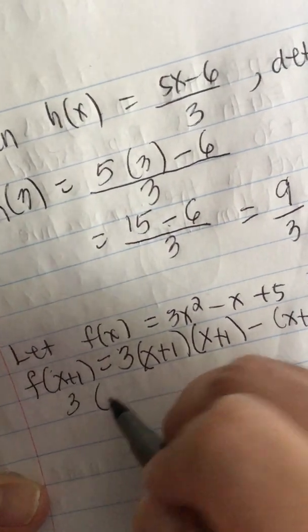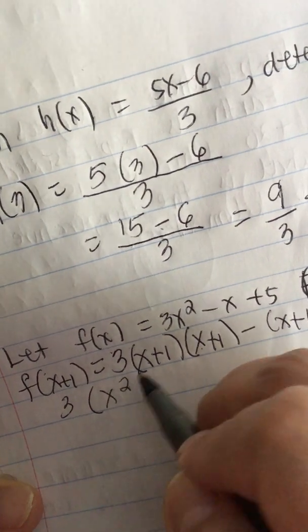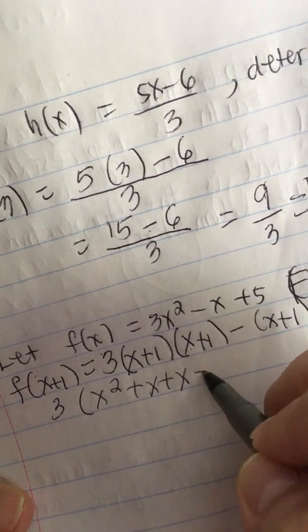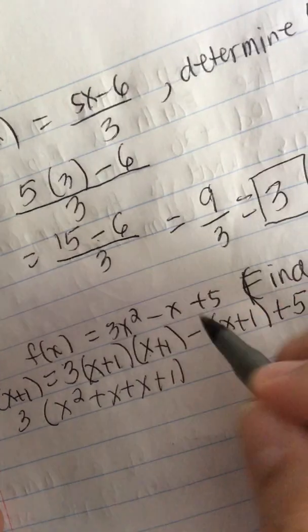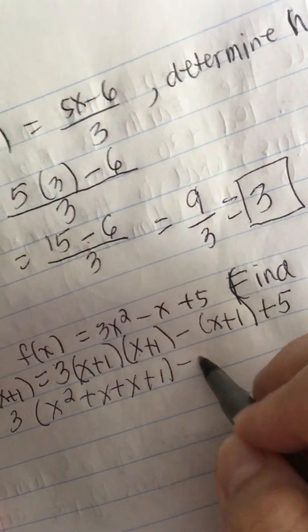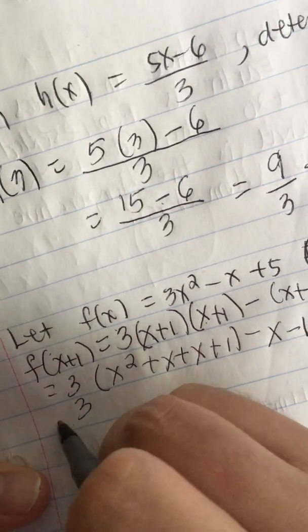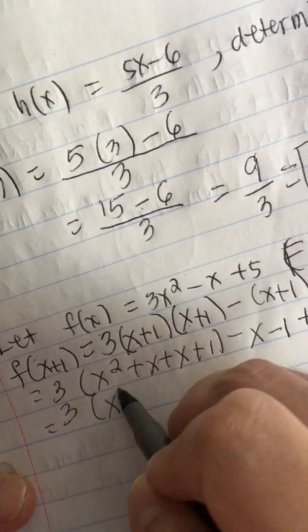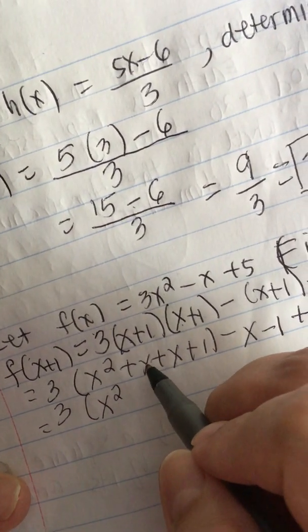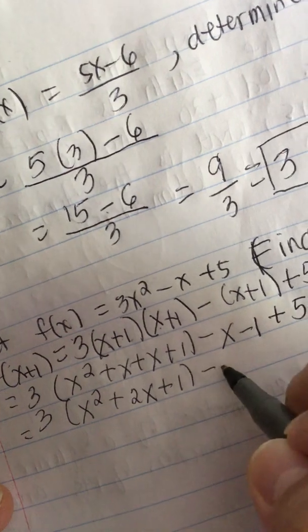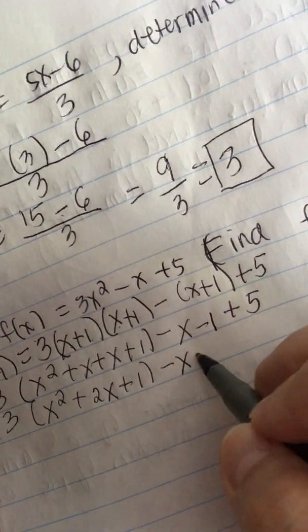We have x plus 1 and then plus 5. So we have 3, x times x is x squared, x times 1 is x, 1 times x is x, plus 1 times 1 is 1. So we distribute this minus sign, minus x minus 1 plus 5. So it's equal to, combine like terms, x plus x plus x is 2x plus 1 minus x minus 1 and plus 5 is plus 4.